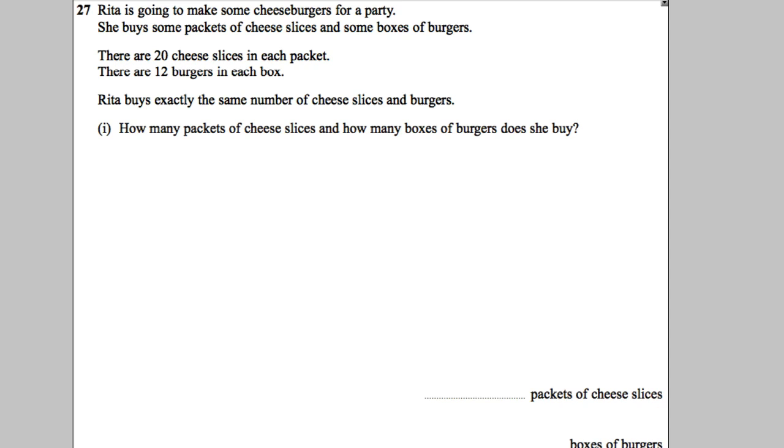Okay, Rita is going to make some cheeseburgers for a party. Let's highlight this question, question 27. She buys some packets of cheese slices and boxes of burgers. There are 20 cheese slices in each packet. There are 12 burgers in each box. She buys exactly the same number of cheese slices and burgers.